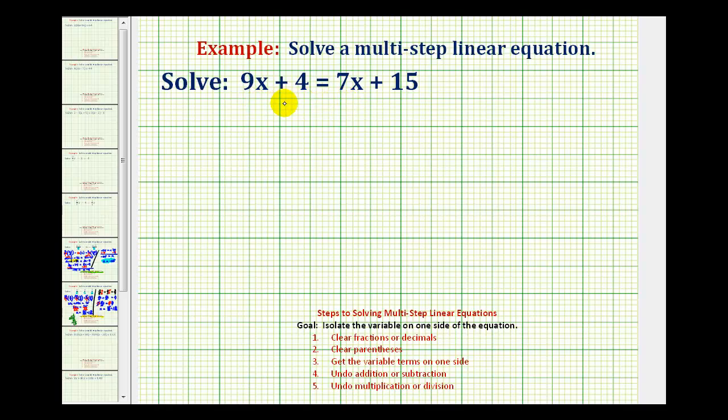We're not going to be able to isolate x if it's on both sides of the equation. Our first goal is to either undo the 7x on the right side of the equation or undo the 9x on the left side. We have to decide if we want to subtract 7x on both sides to eliminate the x term on the right side,